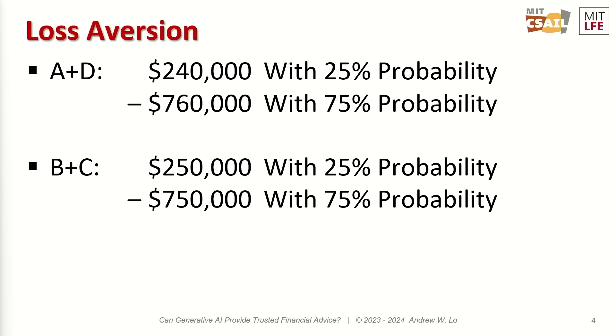The few of you that picked B and C — this is what you would have gotten. The exact same probabilities of winning and losing, 25 versus 75. But when you win, you win $250,000, not $240,000. And when you lose, you lose $750,000, not $760,000. In other words, the choice that most of you did not pick, B and C, is actually equivalent to A and D plus $10,000 for sure.